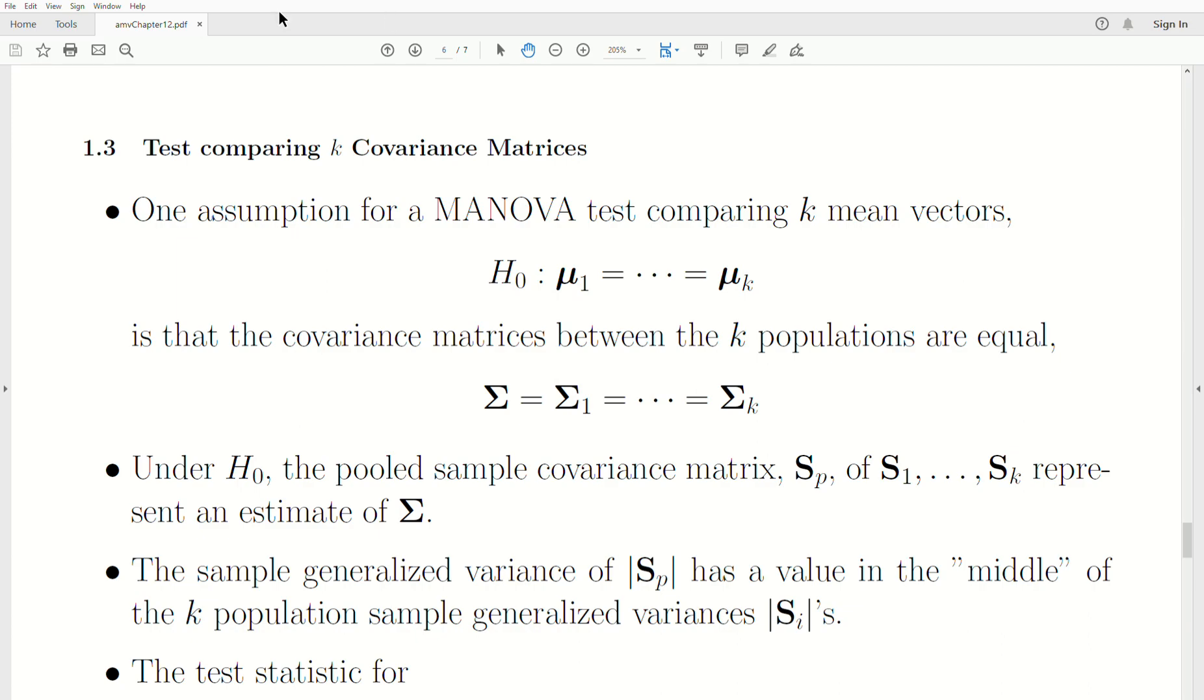Now, as a reminder, one assumption for a MANOVA test comparing K mean vectors, mu1 through muK, is that the covariance between the K populations are equal. So all the covariance matrices equal some common covariance matrix sigma.